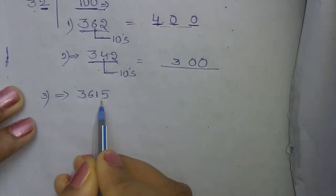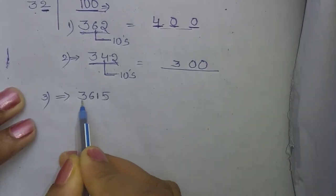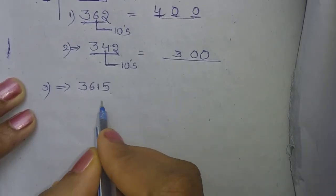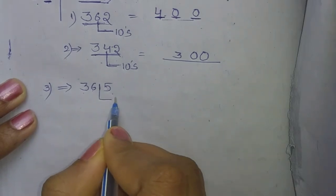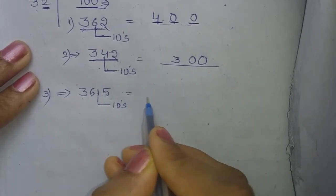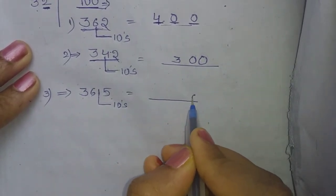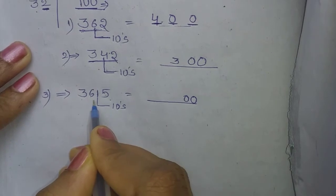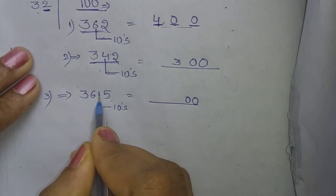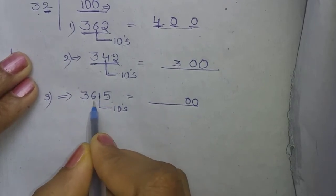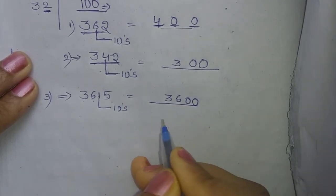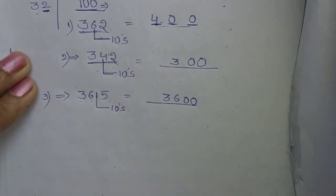We have a 4-digit number: 3,650. We check the tens place number, which is 5. The number 5 or above means round up. The tens place becomes 0, and we add 1 to the hundreds place. The thousands place stays the same. So using the nearest hundred, the answer changes.